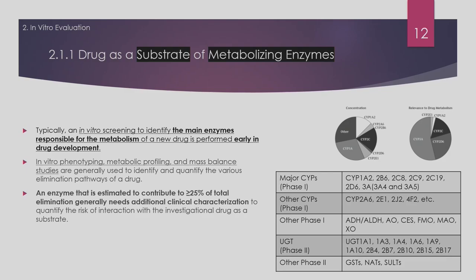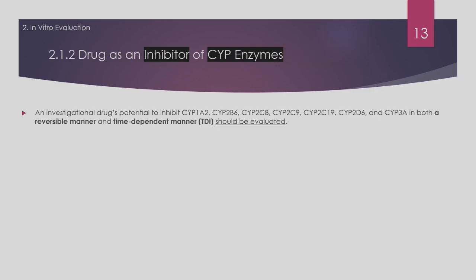The major CYP enzymes listed in the guideline are: 1A2, 2B6, 2C8, 2C9, 2C19, 2D6, and 3A. For the major CYPs, the metabolism route needs to be understood. UGT pathways — 1A1, 1A3, 1A4, and others — also need to be assessed. Other CYPs may serve as major pathways on a case-by-case basis, but most drugs fall into these major CYPs.